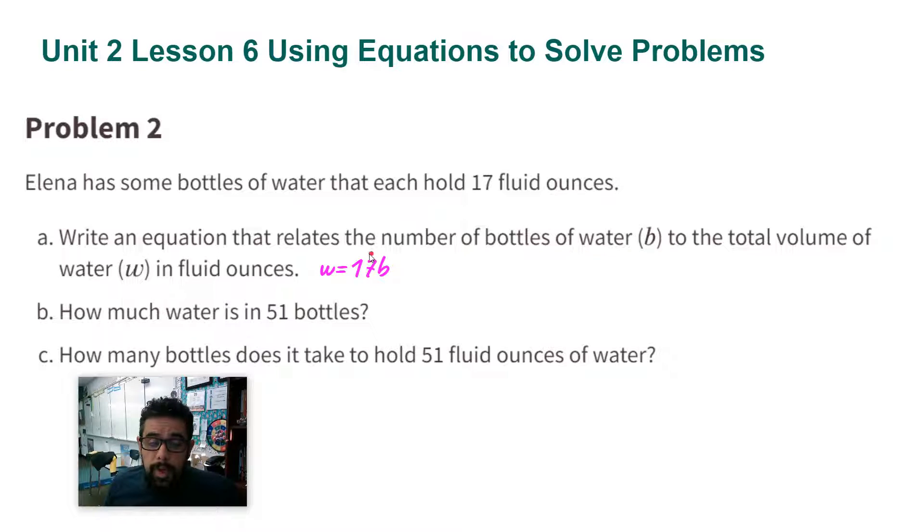So for example, one water bottle will hold 17 fluid ounces. 17 times 1 is 17. For two water bottles, I'm going to do 17 times 2, which will tell me how much water, which is 34. So every time I'm multiplying by 17, so that's the equation. I had to use W and B because that's the variables that were given to us in the problem.